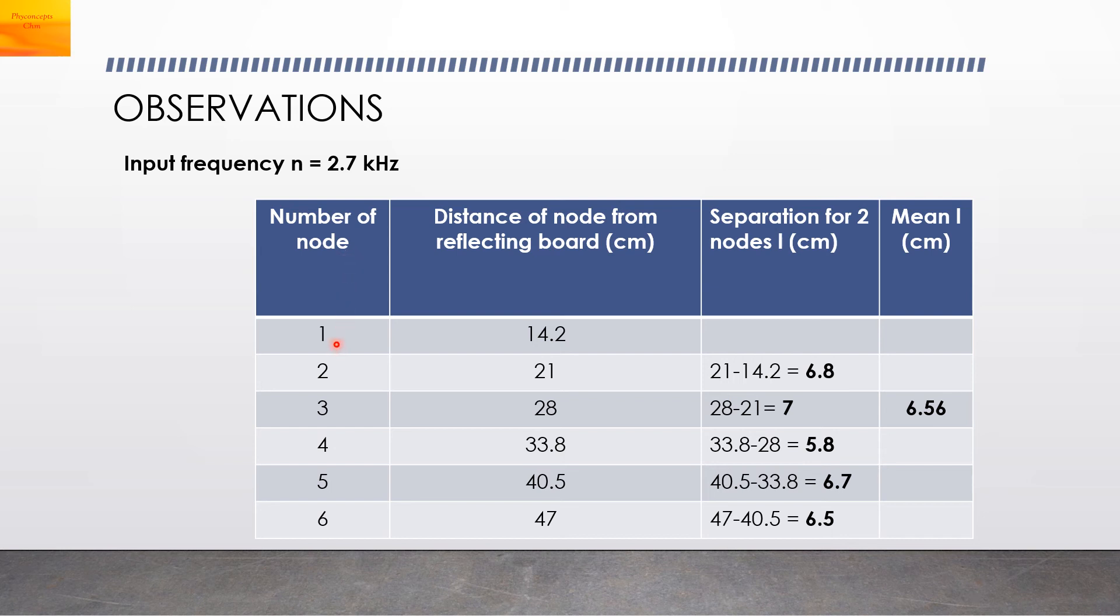This is the number of anti-nodes or the nodes, which we will take as the first node, second node, third node, fourth node, and so on. Then distance of the node from the reflecting board in centimeters. Then separation for the two nodes, that is we will get small l. So we will subtract two readings, that is 21 minus 14.2, then 28 minus 21, 33.8 minus 28. That way we will get l, the separation between two nodes. Then we take the mean of all these readings. You get mean l as 6.56 centimeters.